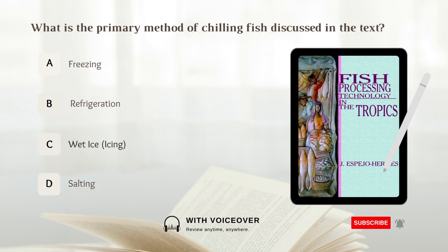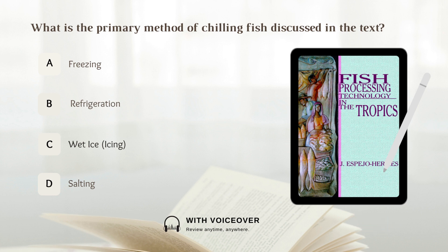What is the primary method of chilling fish discussed in the text? A. Freezing. B. Refrigeration. C. Wet ice or icing. D. Salting. Answer: C. Wet ice or icing.